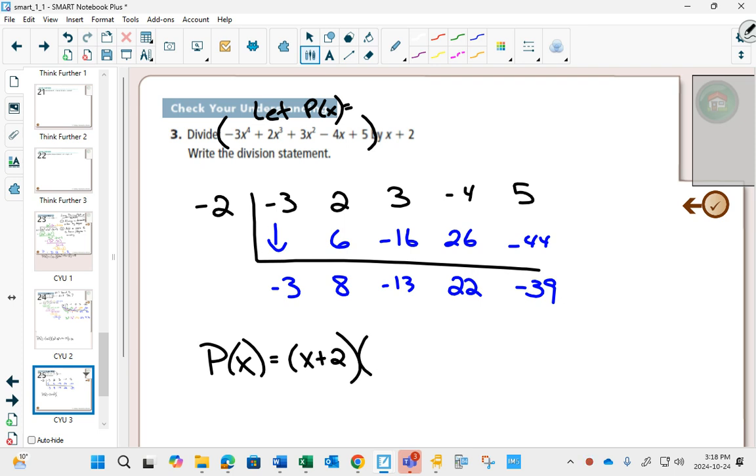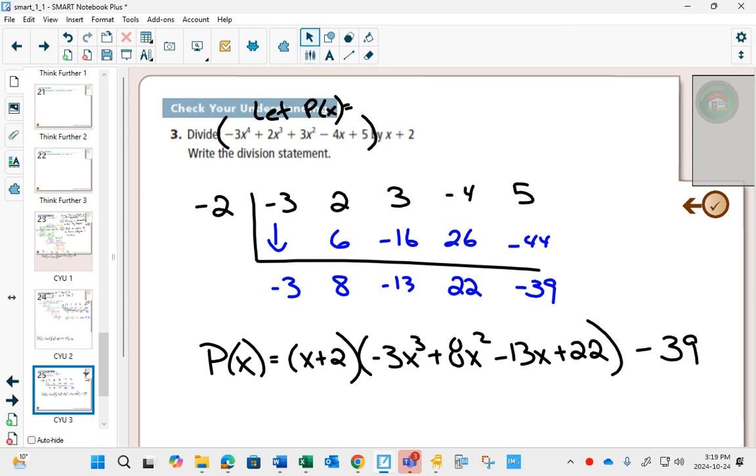My answer is going to be negative 3. Now when I'm trying to figure out what x I should write with it, well I started with an x to the 4, it's going to be x to the 3 plus 8x squared minus 13x plus 22.